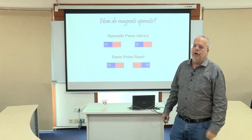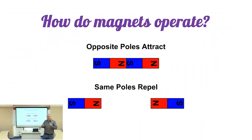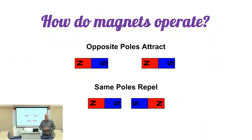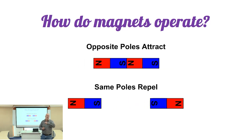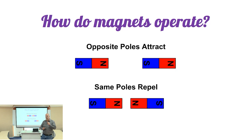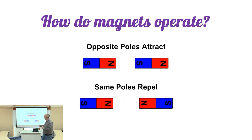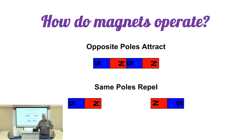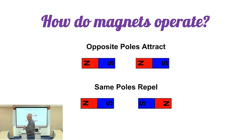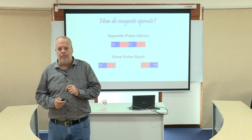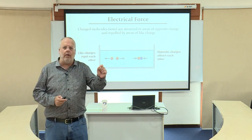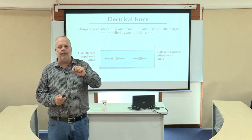Secondly, we have the electrical force. The important concept here is what we see with magnets. Ultimately, opposite charges attract, whereas same charges repel each other.